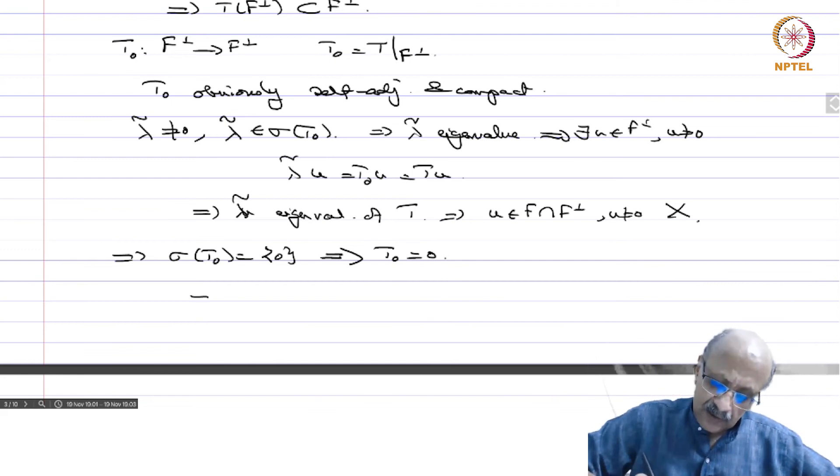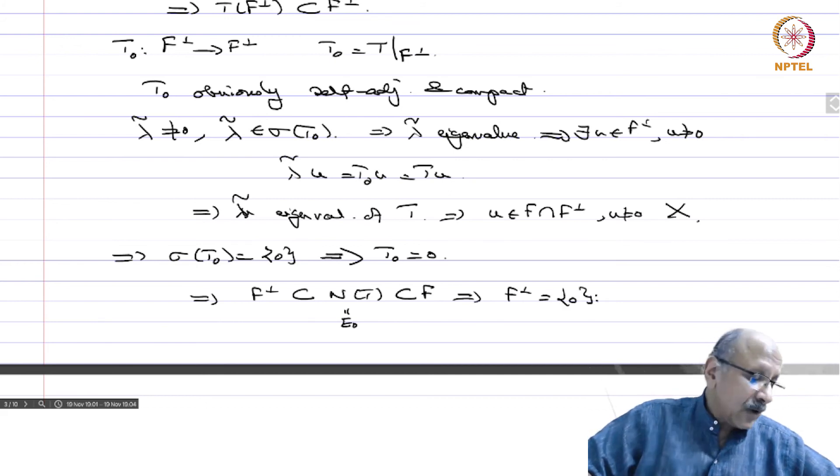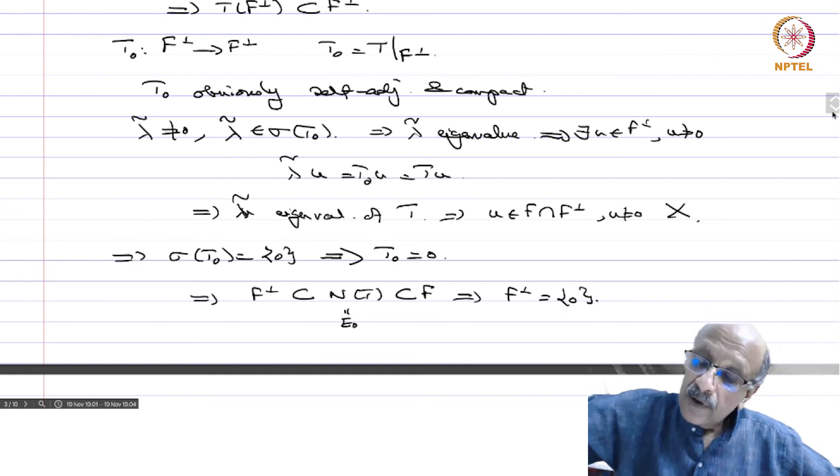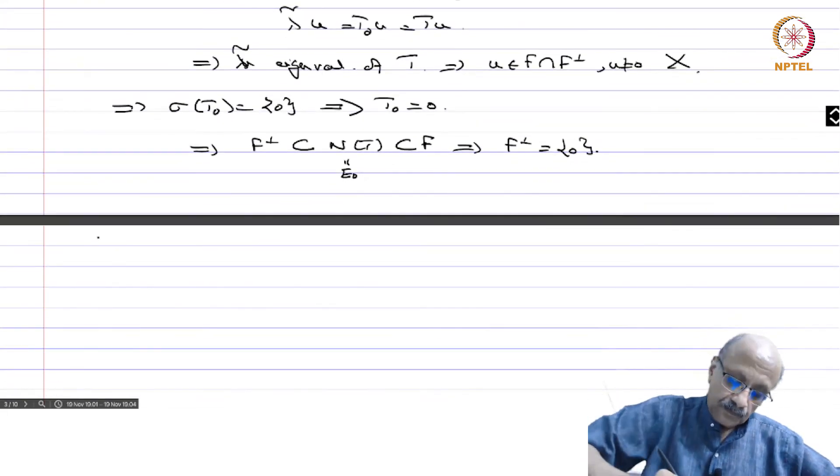That means this implies that F perp is contained in the null space of T and null space of T is contained in F, this is E_0 in fact. Therefore this implies that F perp equals singleton 0, that is the only way it is possible.